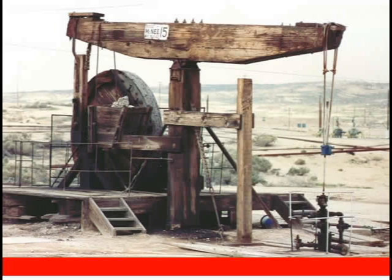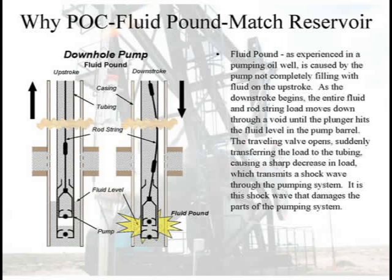What are we really talking about when we want to control a well? Most of you designed your unit to get every bit of fluid out of that well you can — most likely more than what you can. So now you're going to have a situation called fluid pound, where there's not complete fillage of the pump. On the down stroke, the pump goes through a gassy column before it hits the fluid. You remember diving off the side of the pool — not too bad. Get up on the high dive and jump off. It feels a little different when you hit that fluid, doesn't it? The rod string feels the same thing.